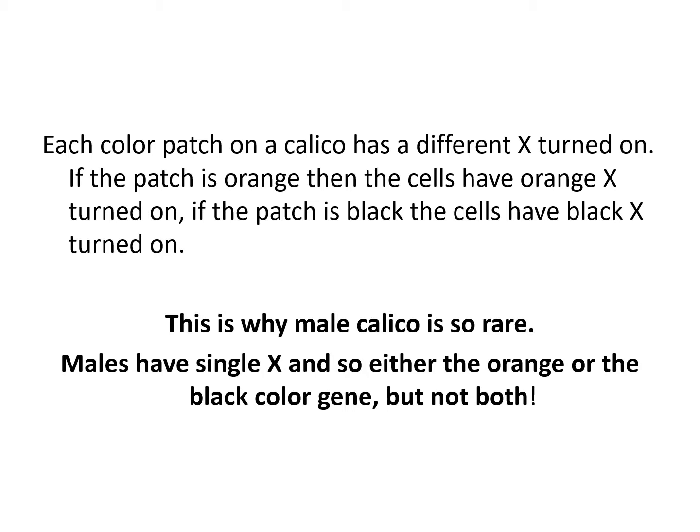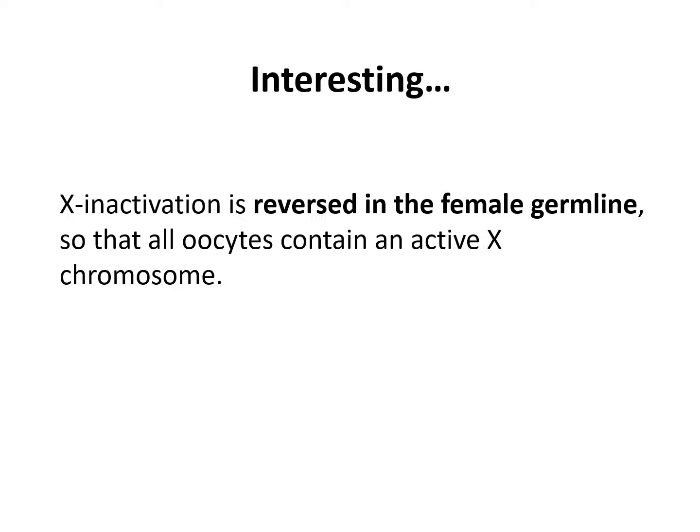Each color patch on a calico cat has a different X turned on. If the patch is orange, the cells have the orange X turned on. If the patch is black, the cells have the black X turned on. This is why a male calico cat is so rare — males have just one X, so they can express orange or black, but not both.